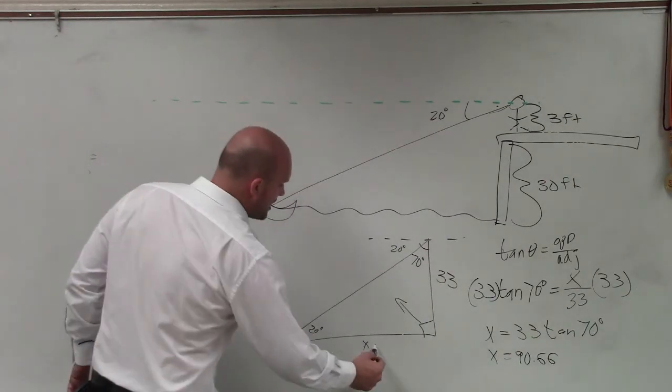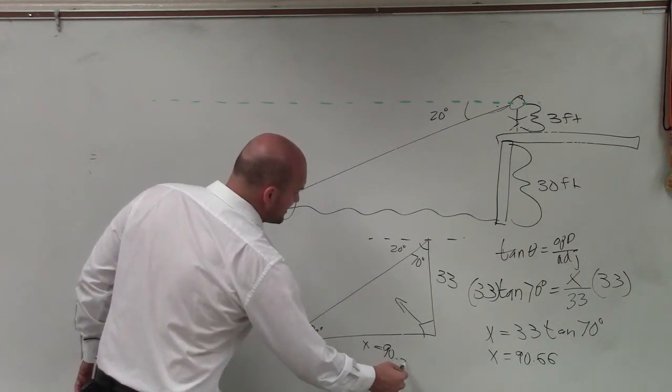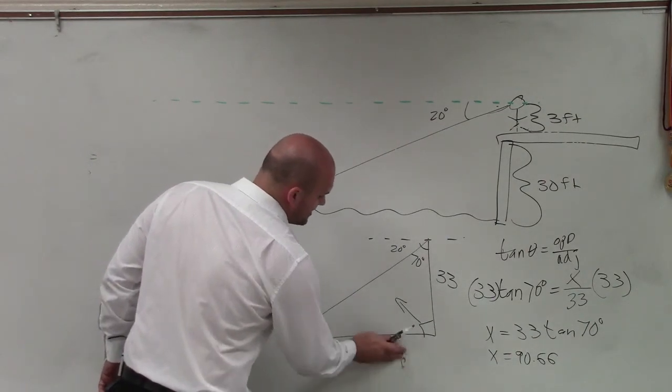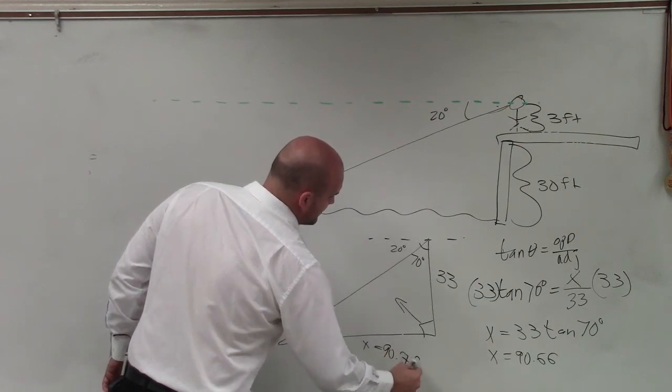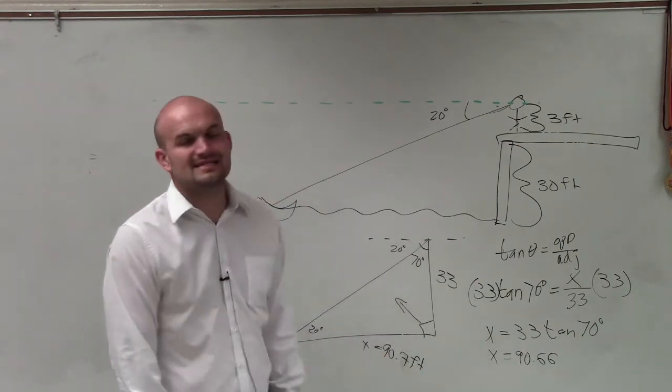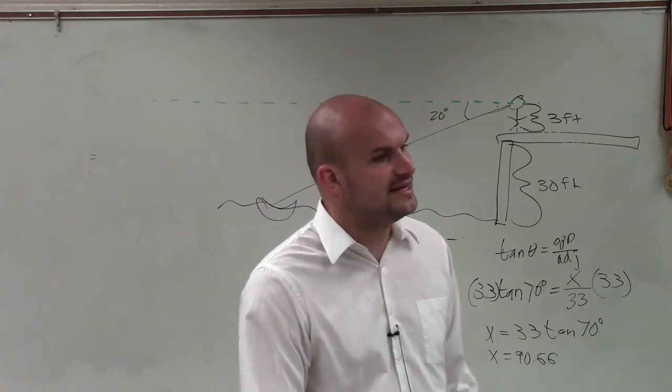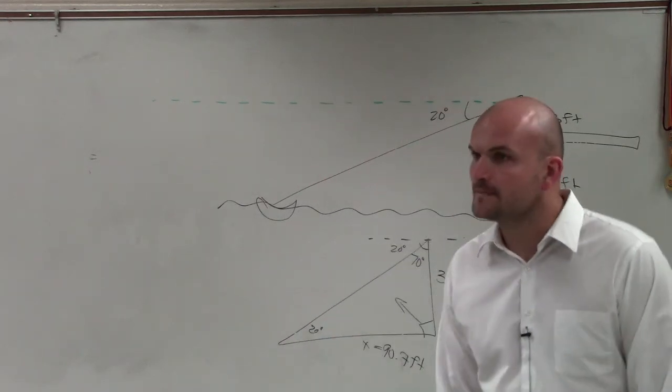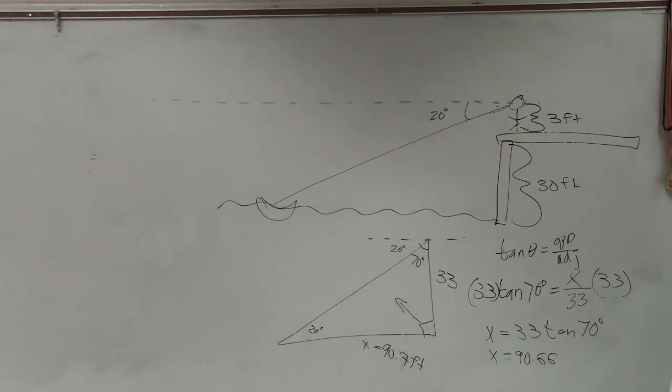So therefore x equals 90.67 feet, rounding to the tenth. That means the whale is 90.67 feet away from Kyle.